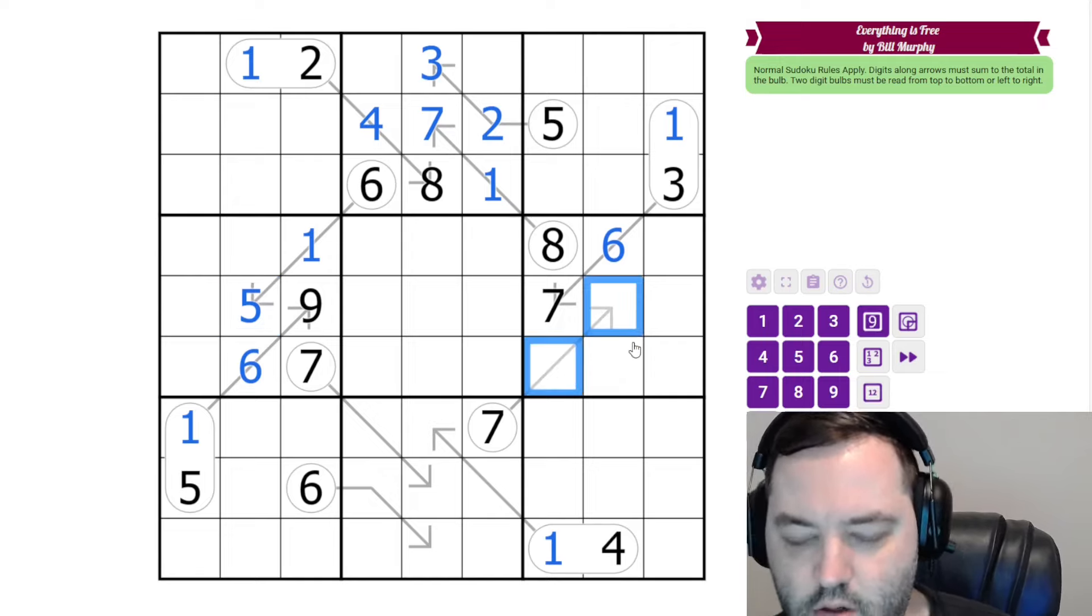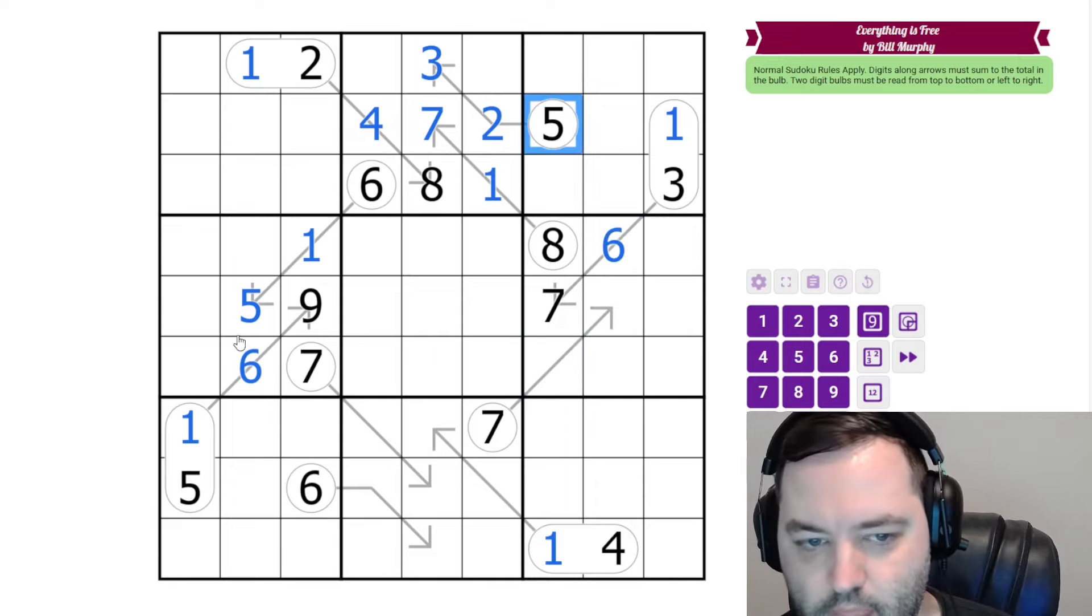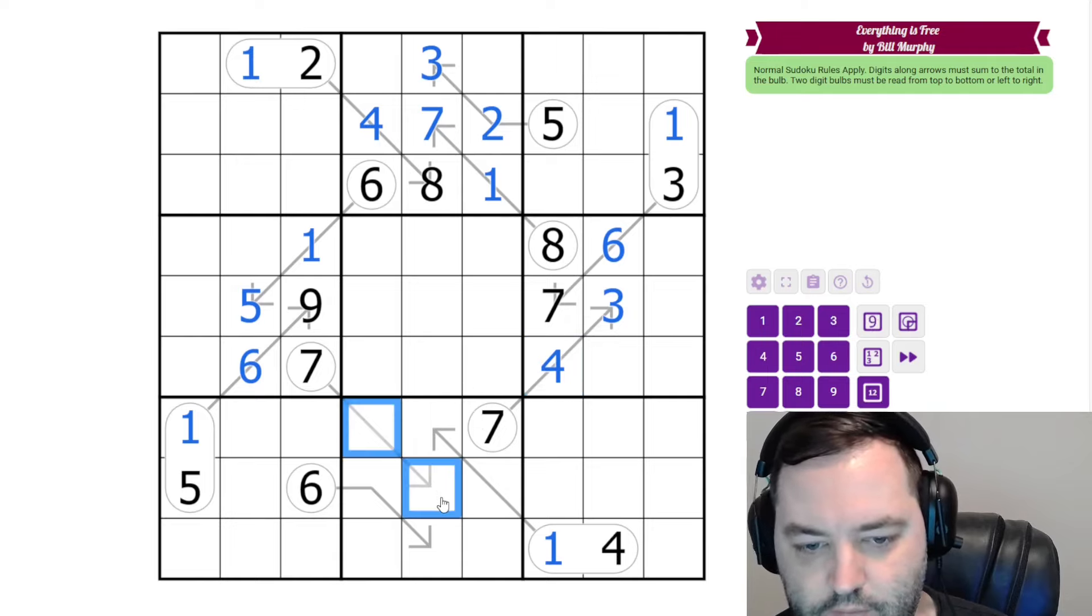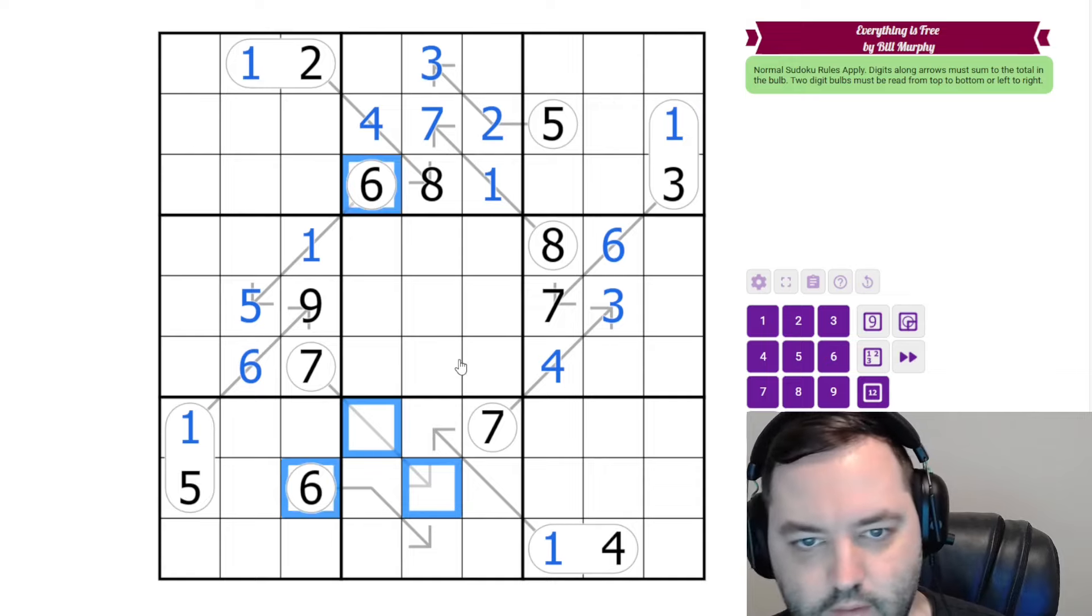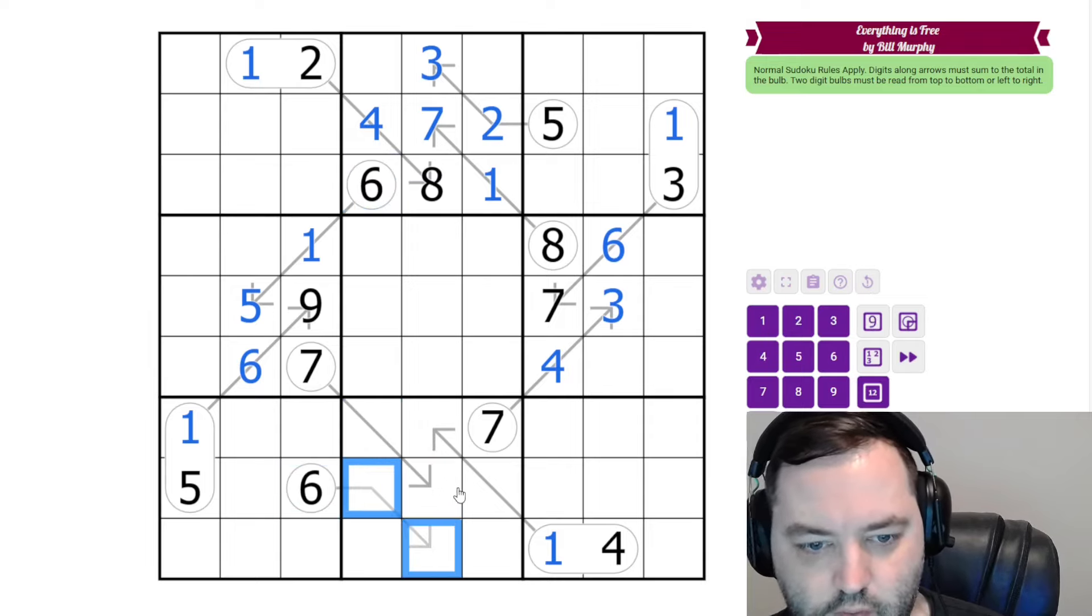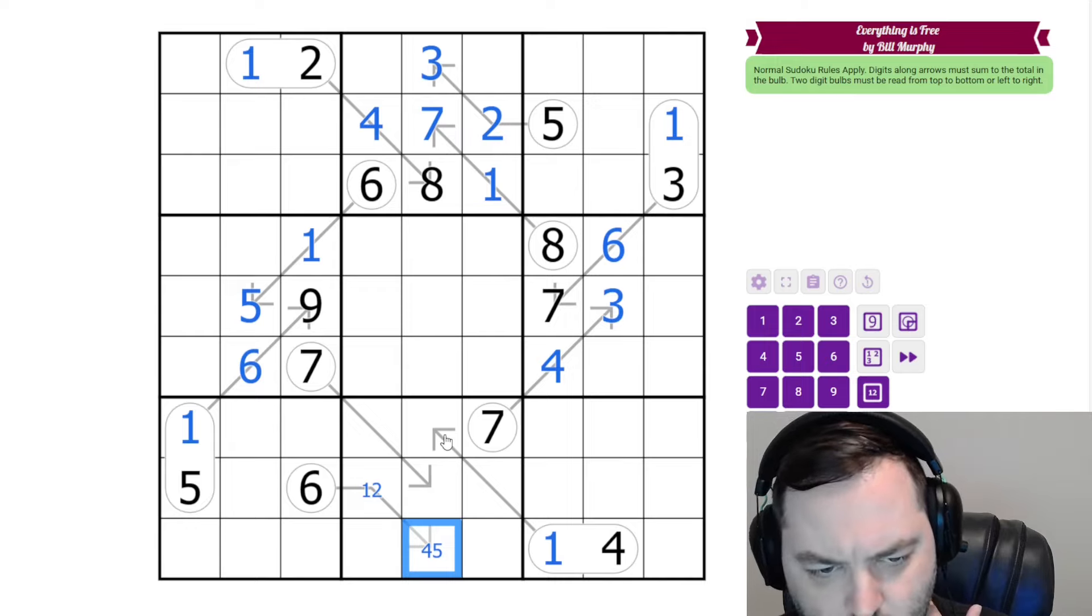And then here, we can't have 1, 6 to make 7. We also can't have 5 on this arrow. So we can't do 2, 5. So this has to be 3, 4. This 7 can't be 1, 6 because of these 6s. I don't think we can rule out 2, 5 yet. So let's look at the 6 first. So this could be 1, 5 in this order. This could be 2, 4 in this order. So yeah, we can't resolve that directly. However, where does 1 go in the box? It has to go in one of these cells.